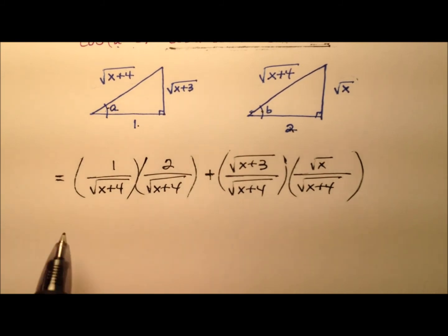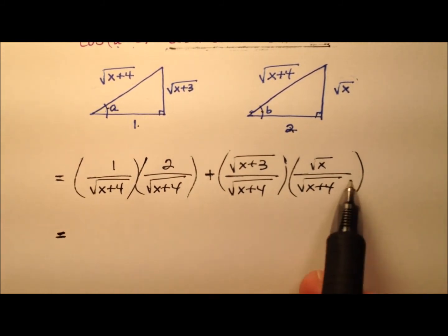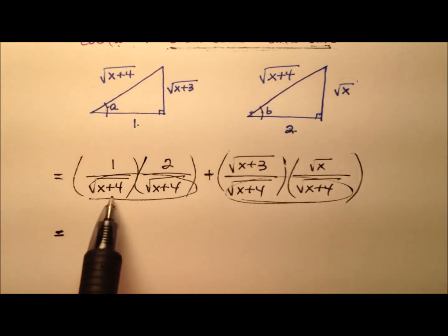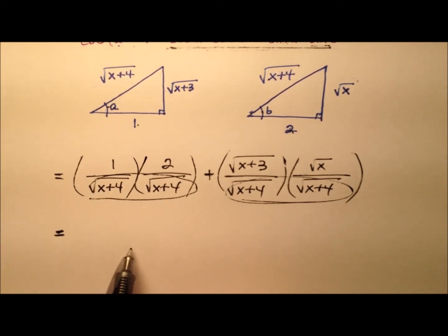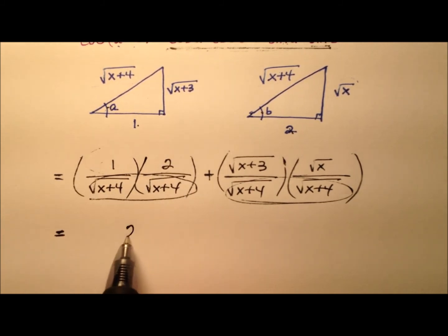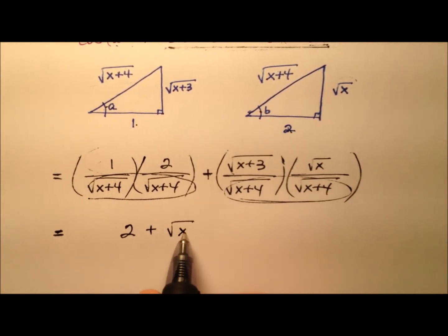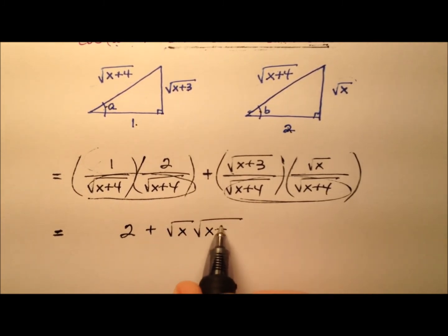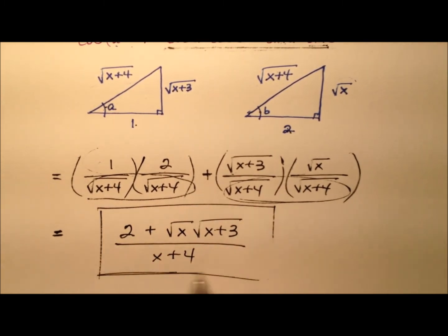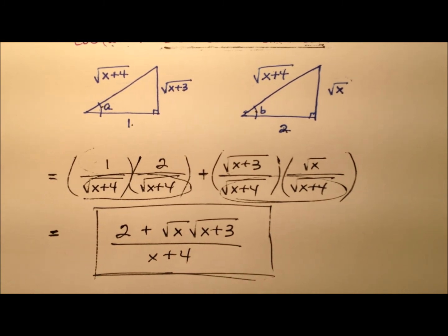So here now is going to be our algebraic expression. Let's just clean this up a little bit. I can see that both of these denominators will be the same. I have the square root times the square root, and the radicands are the same. So I'm just going to have x plus 4 for both of these denominators. So the numerator here is 2. The numerator here will be, well, we could write this a couple of ways. We could say the square root of x times the square root of x plus 3, and that's all over that common denominator of x plus 4.